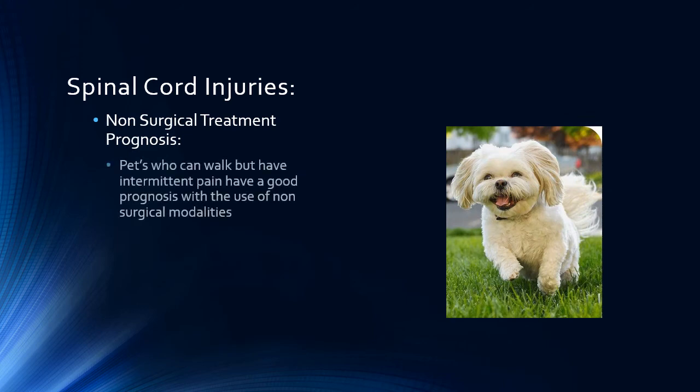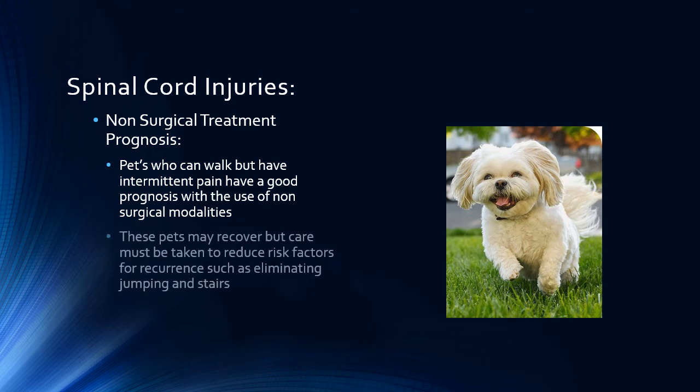The prognosis for pets with spinal cord injuries who can still walk but have pain is generally very good. Rest and treatment with the modalities listed previously will most often get them back to normal function. However, owners must be aware that once a pet has a spinal injury, they will be prone to recurrence. Reducing risk factors such as jumping, playing ball, running on slick surfaces, and maintaining a lean body weight will help protect your pet from future occurrences.